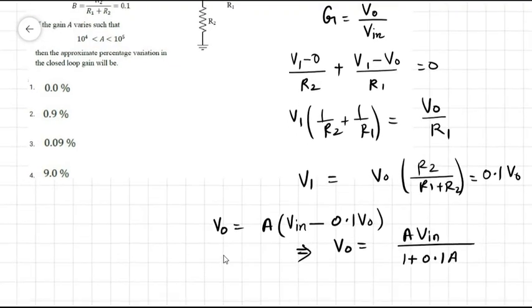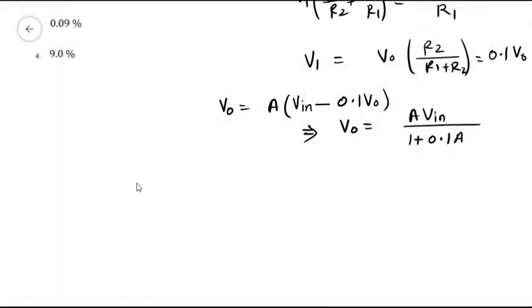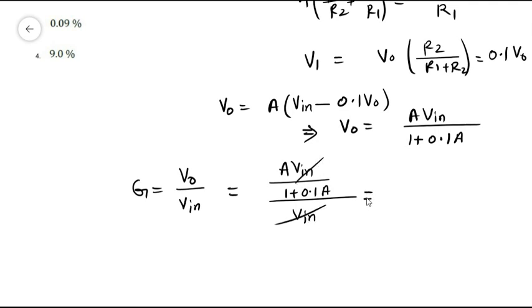With this we can calculate the closed loop gain. Closed loop gain equals v_o/v_in, which equals (A v_in)/(1 + 0.1 A) divided by v_in. When v_in cancels out, this equals A/(1 + 0.1 A).